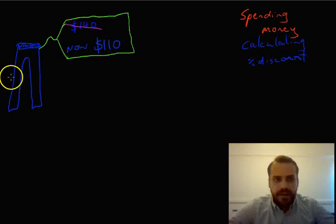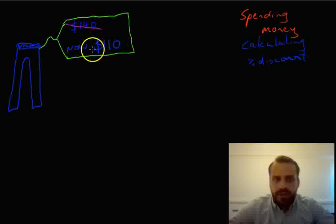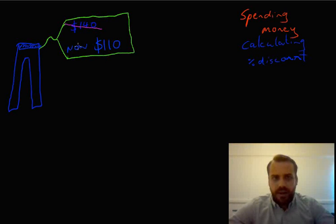Now, we're still buying pants here. In the last video, we bought pants. This time, we're buying pants again. Slightly more expensive this time. These pants were originally $140, but they're now only $110. So the question is, how good a deal is this? What percentage discount are we getting if we pay $110 for something that was originally $140?